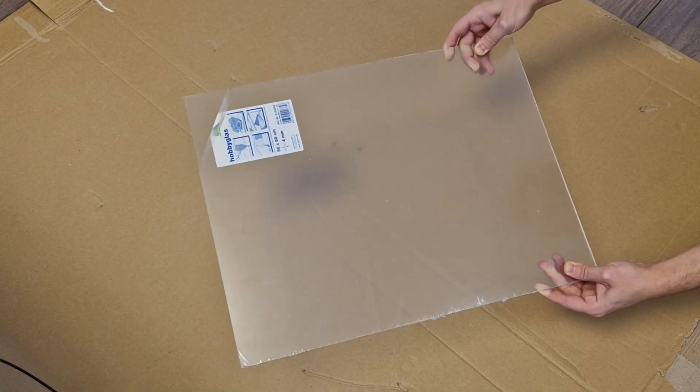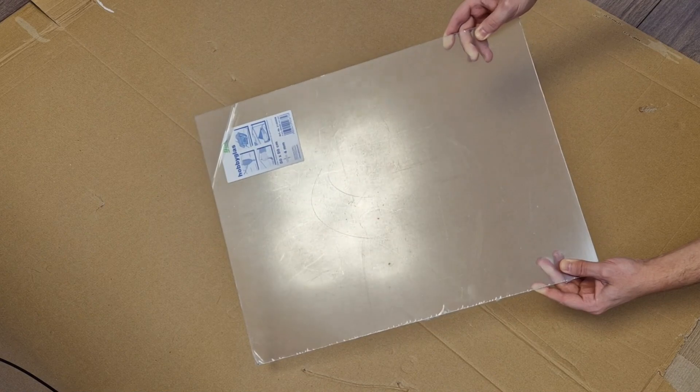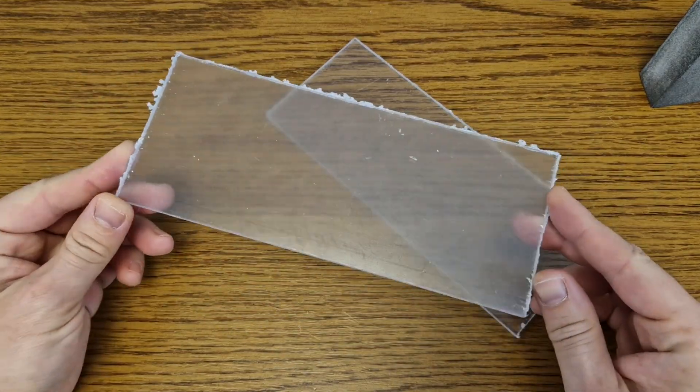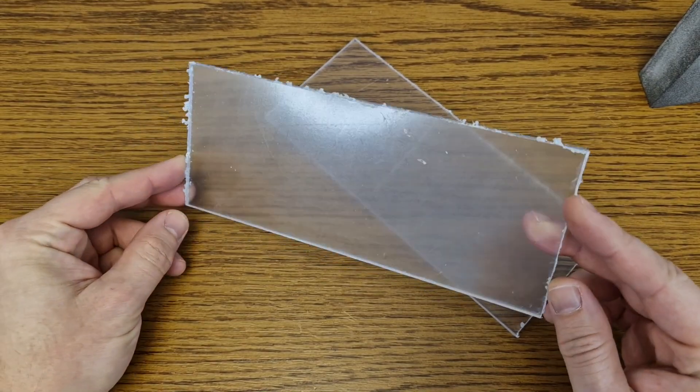Now let's build some LED signs. I have this plexiglass or clear acrylic board from an older project. I will use a handsaw and slowly cut two smaller pieces.